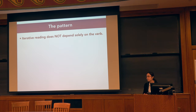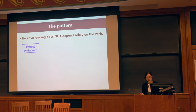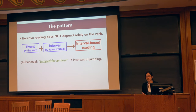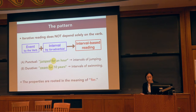The patterns we observe can be summarized as follows. The iterative meaning does not depend solely on the verb. The composition of the event denoted by the verb and the 'for' adverbial gives rise to an interval-based reading. With a punctual verb, 'jump for an hour' denotes intervals of jumping. With a durative verb, 'swam for 10 years' denotes intervals of swimming. The properties of this reading, we argue, are rooted in the meaning of the 'for' adverbials, as captured by Dale and Pinyango's semantic analysis in 2011.